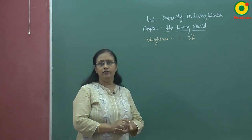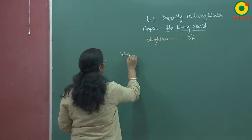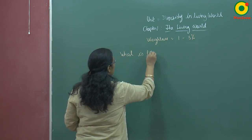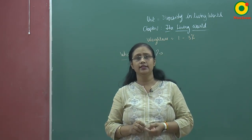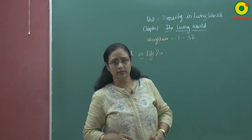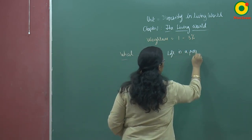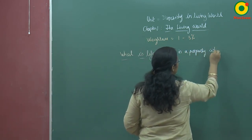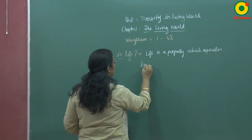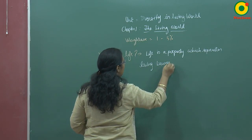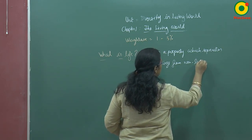Now, what is life basically? Life is a property which separates the living beings from the non-living beings. So life is a property which separates living organisms or living beings from non-living objects.